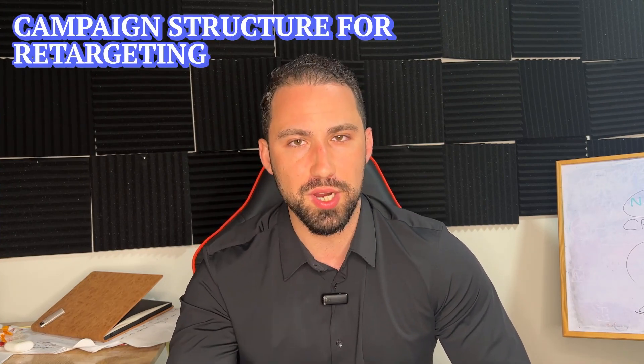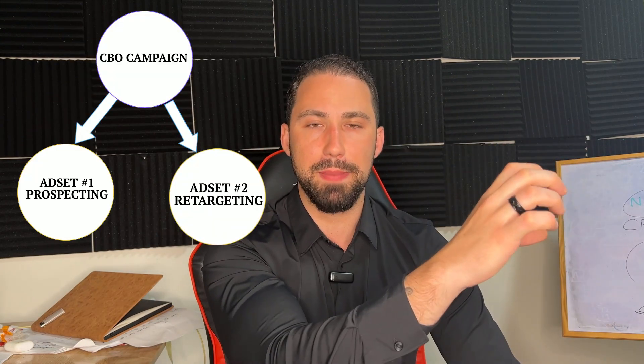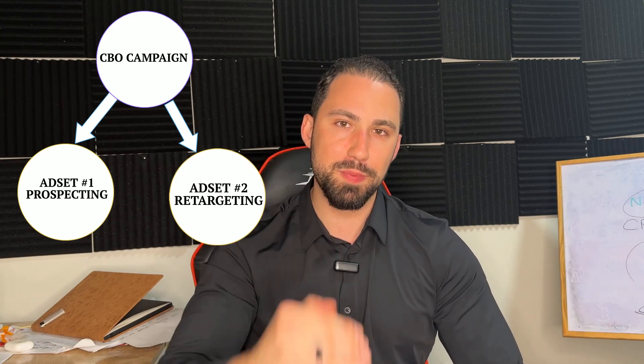Last point: how to structure your retargeting campaign. There are two ways. One is having a separate retargeting campaign. The other is having one CBO campaign where you have both your prospecting and retargeting as separate ad sets under that one campaign. I personally like a separate campaign for retargeting, but if you have a winning audience and a broad audience already profitable, you can add the retargeting ad set into that one campaign.